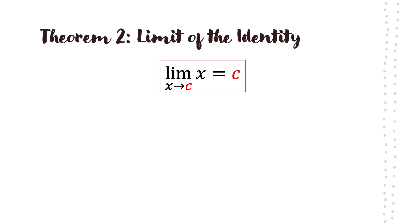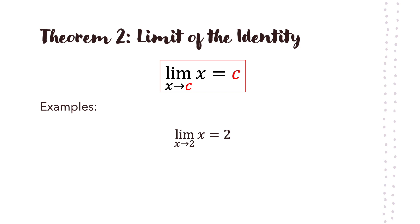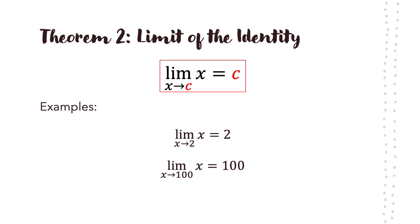Now let's proceed with the second theorem: the limit of the identity. It says the limit of x as x approaches c is equal to c. For example, the limit of x as x approaches 2 is equal to 2. The limit of x as x approaches 100 is equal to 100. And the limit of x as x approaches pi is equal to pi.